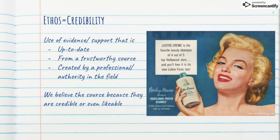Ethos is all about credibility. It's the use of evidence and support that's up to date from a trustworthy source and created by a professional or some kind of authority in the field. We believe the source because they're credible or even likable. A lot of times, just because you trust the person who's saying it, you're more likely to trust the information coming from them. In this case, Marilyn Monroe is seen as a beautiful movie star, and she's telling us that four out of five people in Hollywood use this luster cream shampoo. So if we believe in her and think she's wonderful, we're more likely to use this shampoo. It's an appeal to credibility.